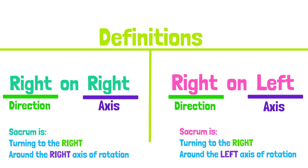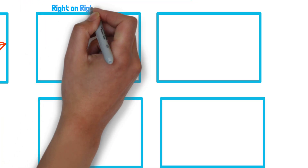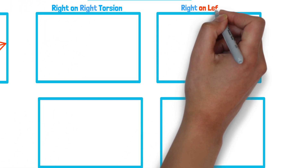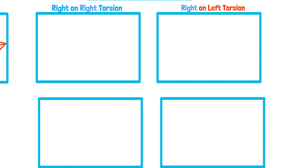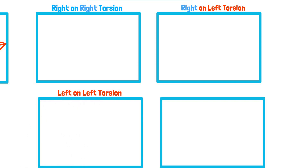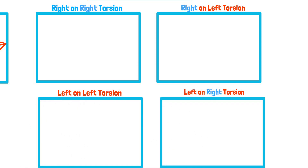There are four possible combinations of movement: right-on-right, right-on-left, left-on-left, and left-on-right sacral torsions.